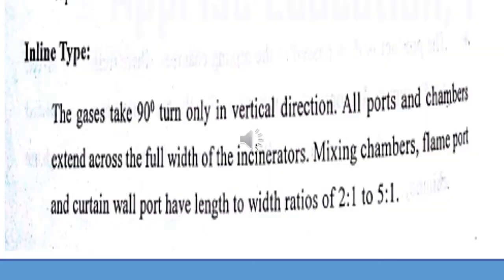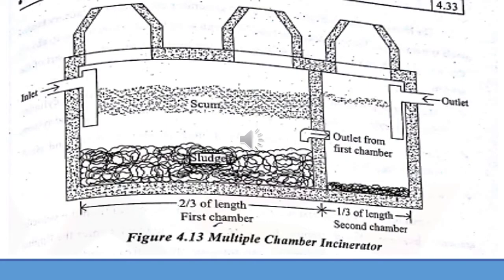The next type is the in-plant type. It is a multi-chamber type in which gases revolve only 90 degrees in the vertical direction. In other chamber types, gases turn both in the horizontal as well as vertical direction. The mixing ratio here is 2:1 to 5:1. This is illustrated in the figure of the in-plant chamber, which is also a multi-chamber design.